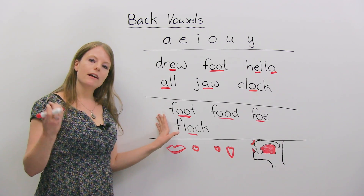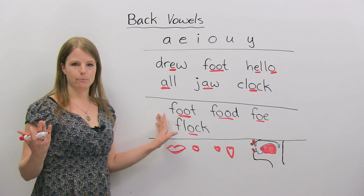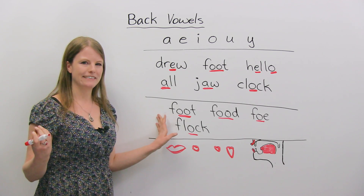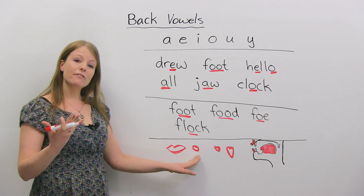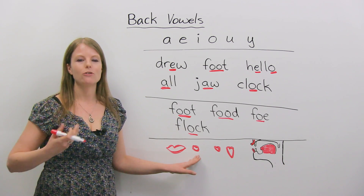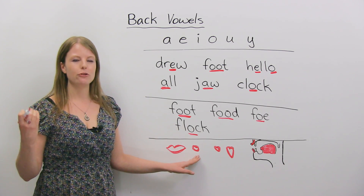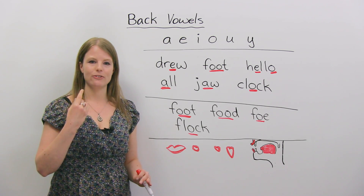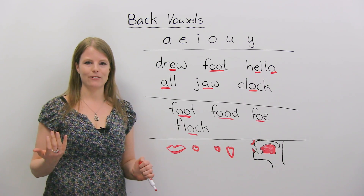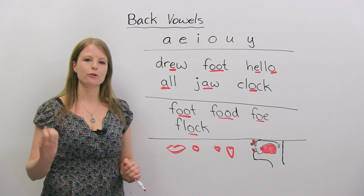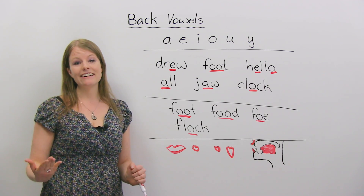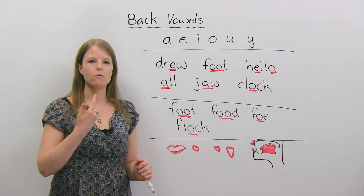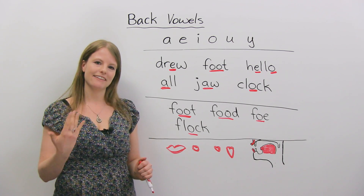Before we get to these different vowel sounds we're going to practice today, I just wanted to tell you some general things about pronouncing vowels. A lot of students don't know what they're doing with their mouth when they're pronouncing. It's very important to pay attention to what your mouth is doing and what your tongue is doing when you actually pronounce something. This will really help you improve your pronunciation. It's also a good idea to use a mirror to look and become aware of what this area is doing to make the sound.